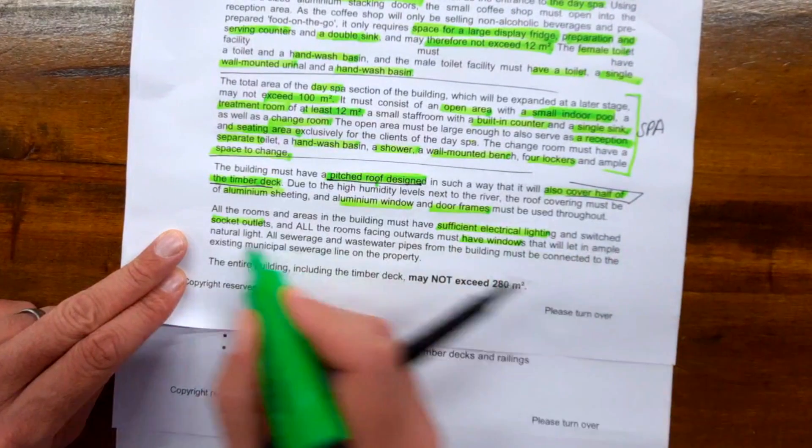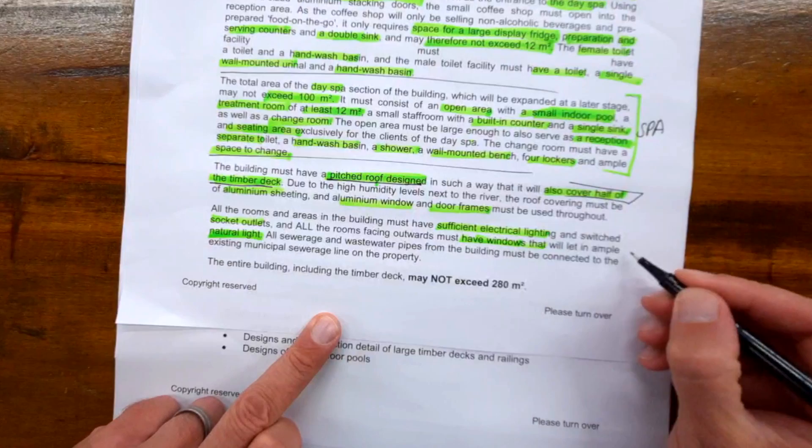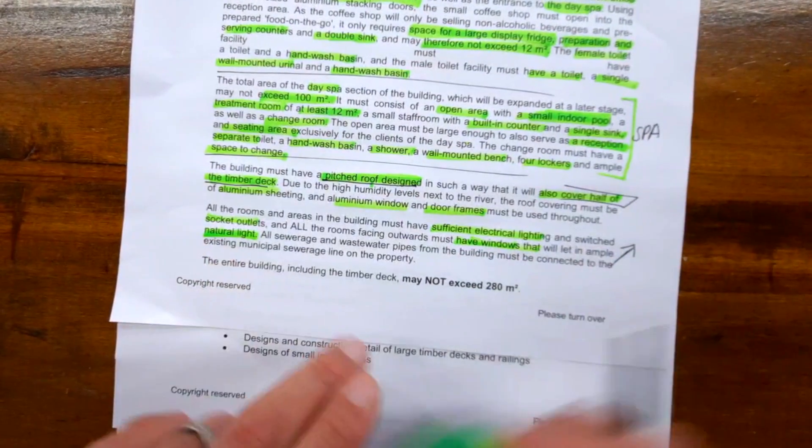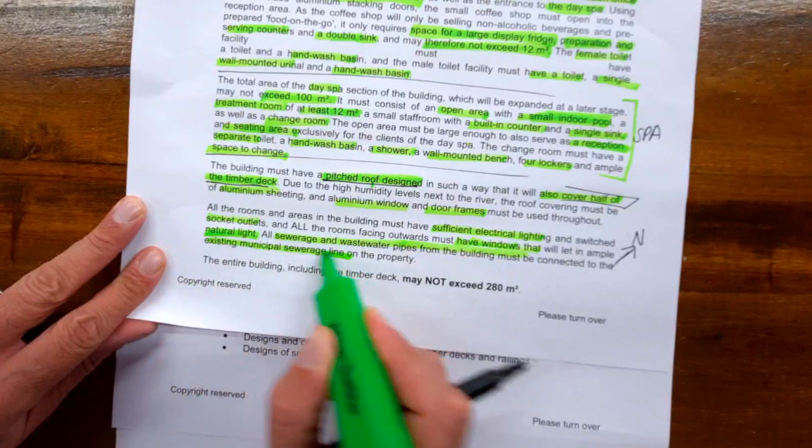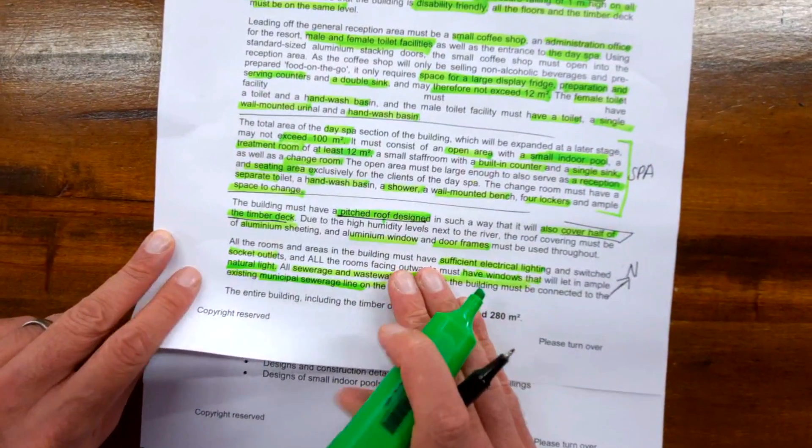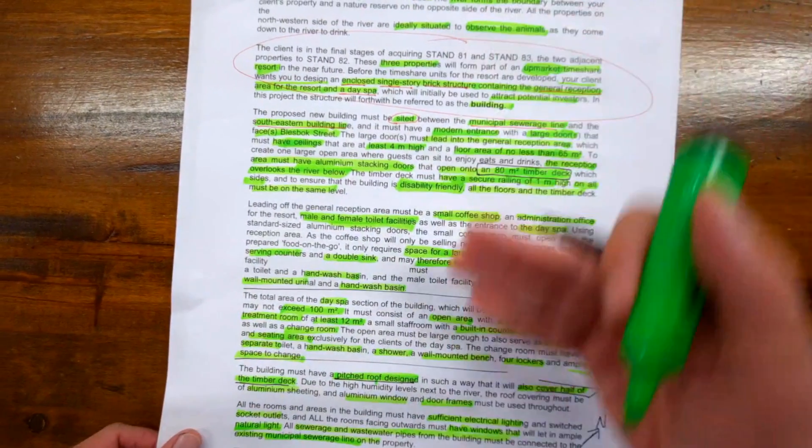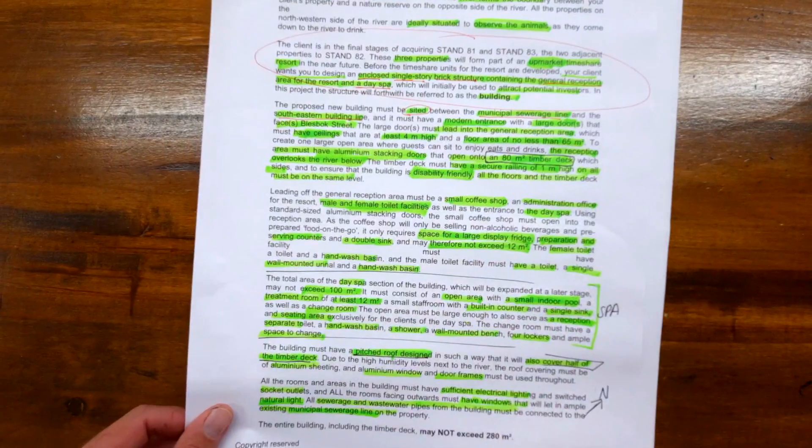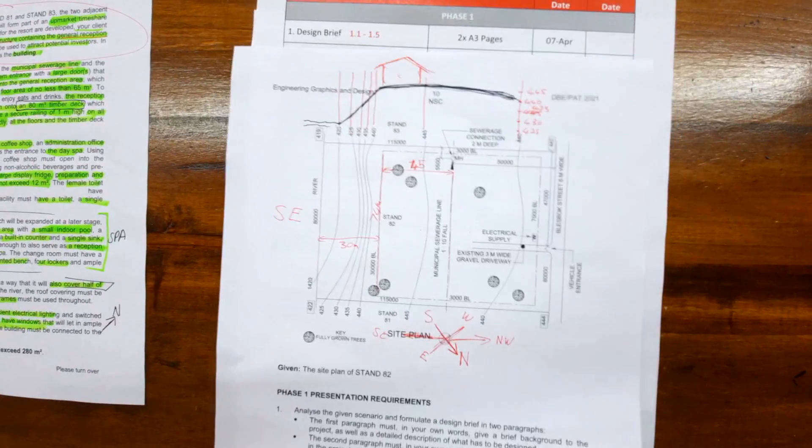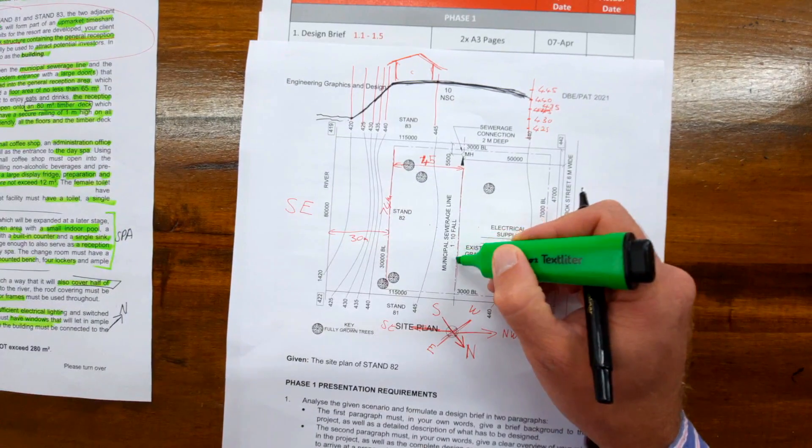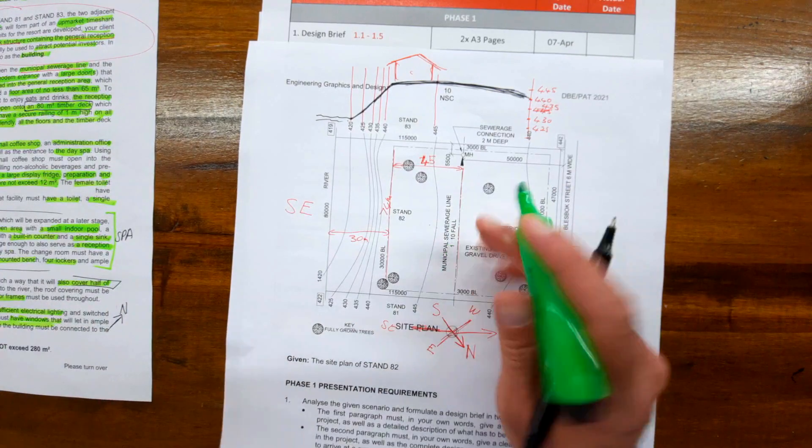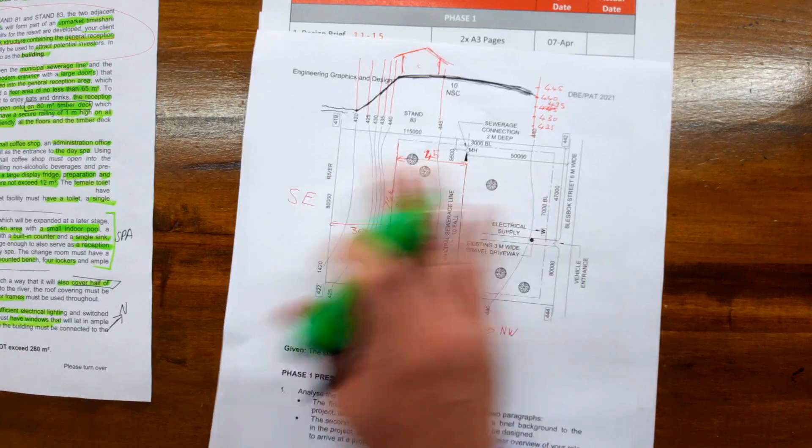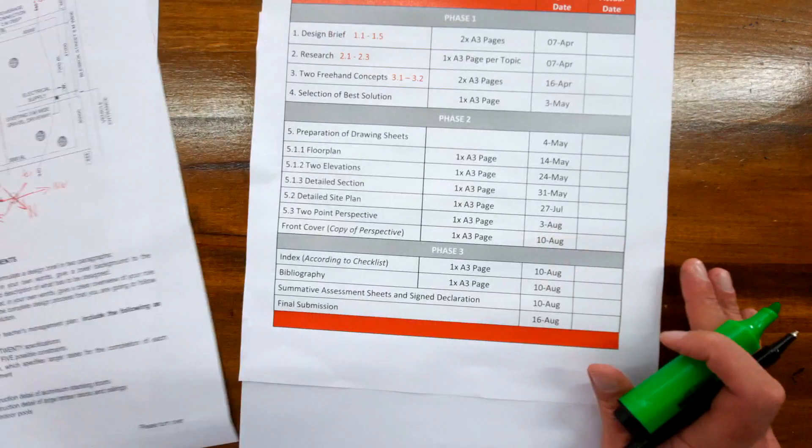All the rooms and areas in the building must have sufficient electric lighting, switch socket outlets, and all rooms facing out must have windows that will let ample natural light—that's where the north arrow comes in. All sewer and wastewater pipes from the building must be connected to the existing sewer line on the property. The direction of flow with your sewer here is important for your actual sewer connection.